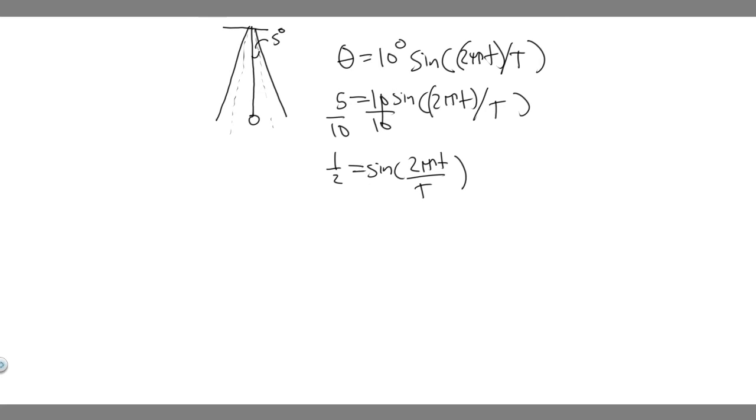So we know sine, you can take the arc sine to find one half. So if I take the arc sine of both sides, that's going to cancel out this. And then you're going to get the arc sine of one half. The arc sine of one half, you should know, is just pi over 6.